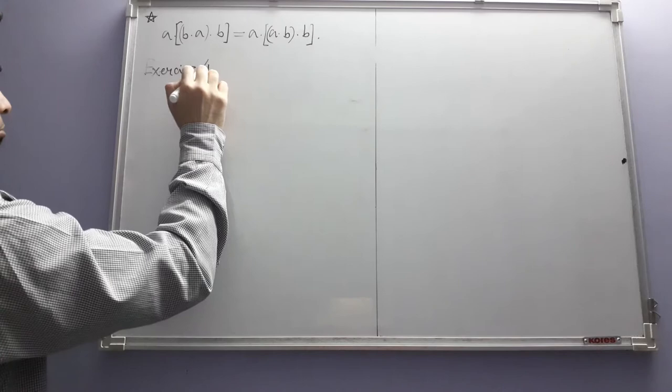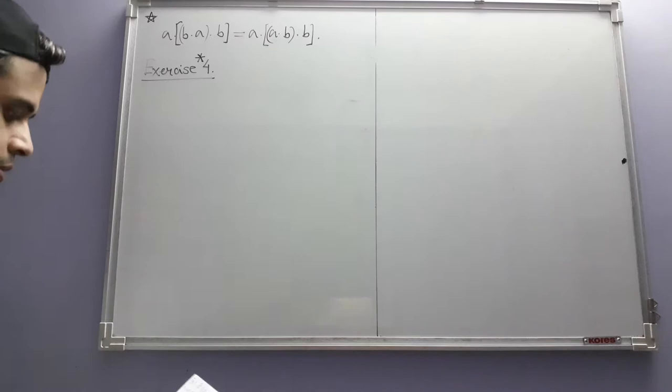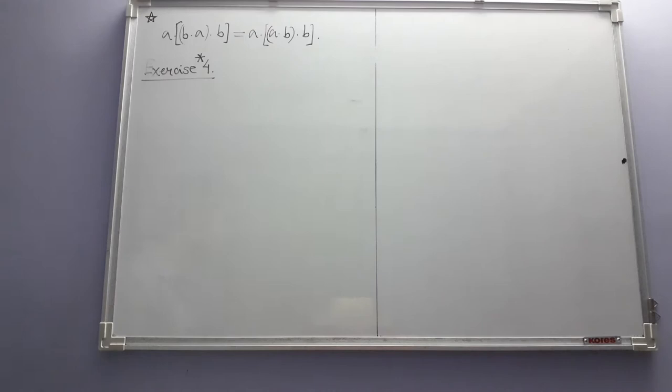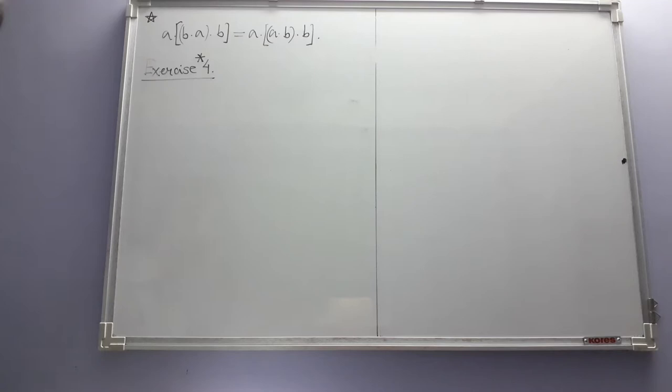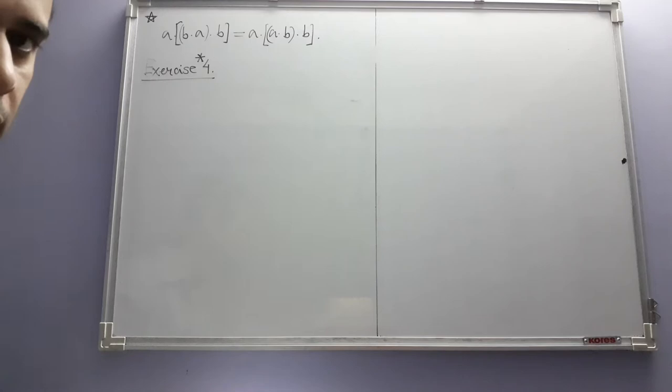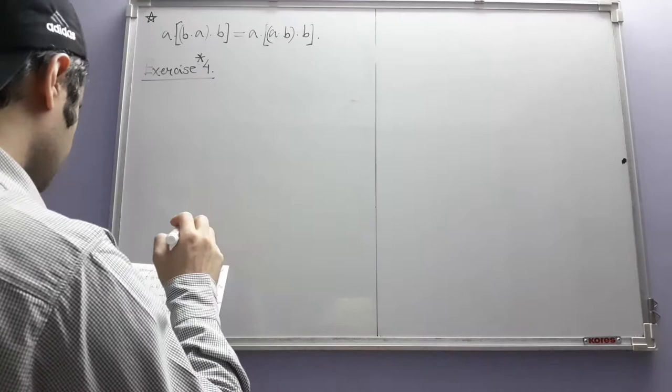Now let's look at Exercise 4. This exercise comes with a star, indicating it is somewhat more difficult than the usual exercises. There are some exercises which come with two stars, meaning their solutions need something from a much more advanced portion or from outside algebra itself. Let us see what this exercise is all about: if G is a group...